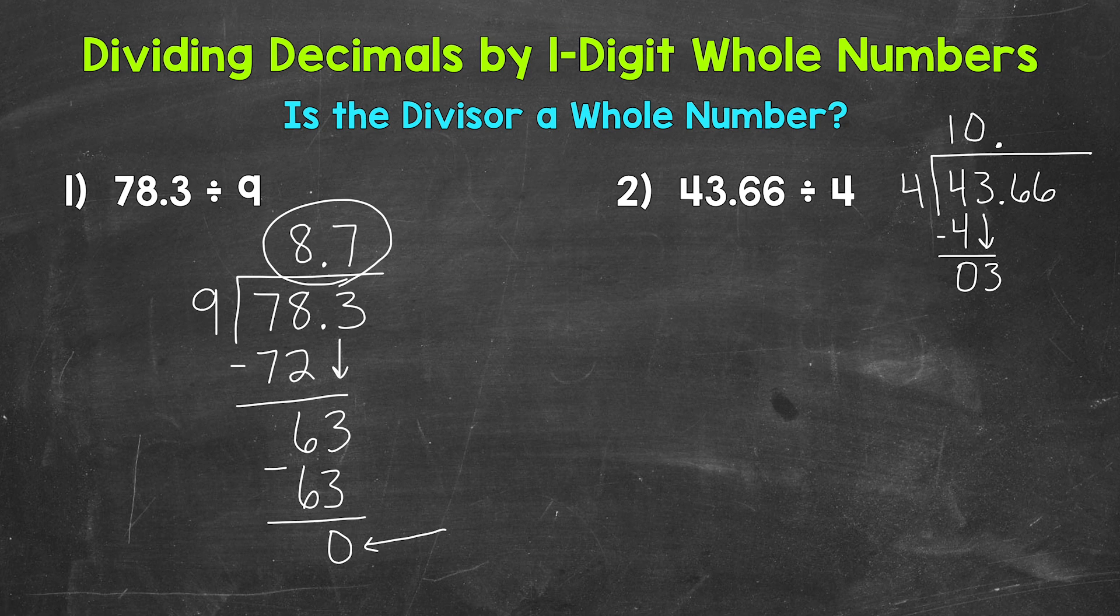Now we multiply. 0 times 4? 0. Subtract. 3 minus 0? 3. Bring down.